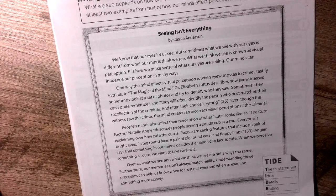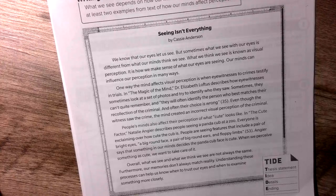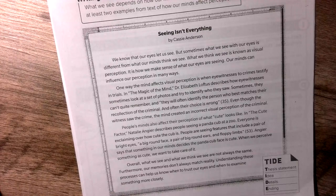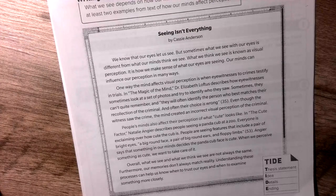People's minds also affect the perception of what cute looks like. In 'The Cute Factor,' Natalie Angers describes people seeing a panda cub at the zoo. Everyone is exclaiming how cute the cub is. People are seeing features that include a pair of bright eyes, a big round face, a pair of big round ears, and fluffy limbs — that is on page 43. Angers says that something in our minds decides the panda cub's face is cute. When we perceive something as cute, we want to take care of it.